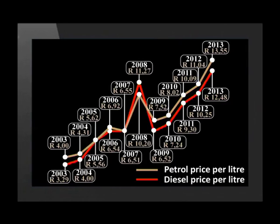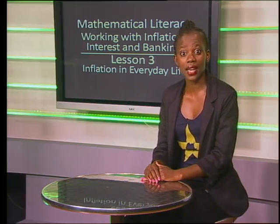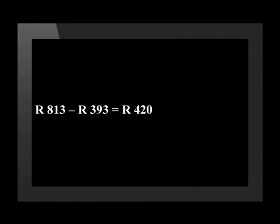Let's look at how to calculate the inflation in the petrol price. Sango has kept track of the changes in price of petrol over the past few years. He asked us to investigate the percentage increase from 2007, where he paid 393 rand to fill up a 60-litre tank with petrol. In 2013, he paid 813 rand to fill up the same tank. To calculate the percentage of increase, we first need to find out how much more Sango has paid and then compare it to the original price. 813 minus 393 rand equals 420 rand.